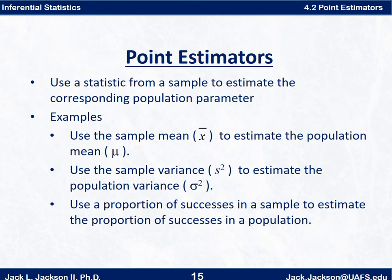The basic idea here is: suppose we want to know the average weight of all UA Fort Smith students. It's impractical to go out and actually measure every single student. So what we might do instead is take a random sample, find the sample mean of that sample, and use that to approximate the population mean weight. So we'd be using x-bar from the sample to estimate mu from the population.